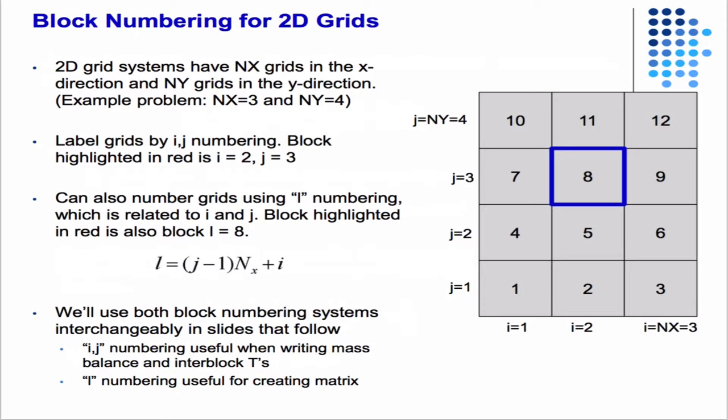The reason we have the two notations is because when we assemble the matrices and vectors, the T and P vectors, it's easier to use L because L carries the total number of grid blocks, and that's the size of the T matrix—the number of grid blocks by the number of grid blocks.